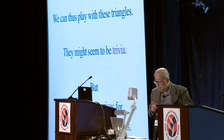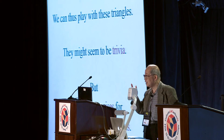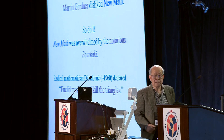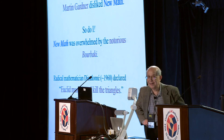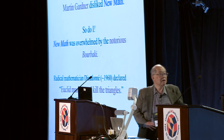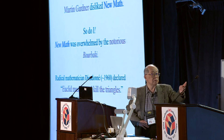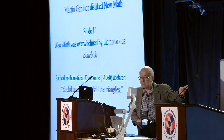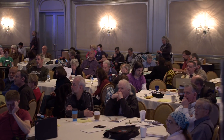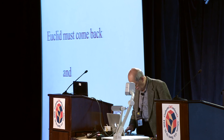These are not so interesting — very trivial properties — but they are good exercises for high school students. Martin Gardner disliked New Math, you know, overwhelmed by the notorious Bourbaki. A radical mathematician, Dieudonné, declared 'Euclid must go' and 'kill the triangles.' That is recorded in the document. So I will declare: Euclid must come back and revive triangles. Thank you.